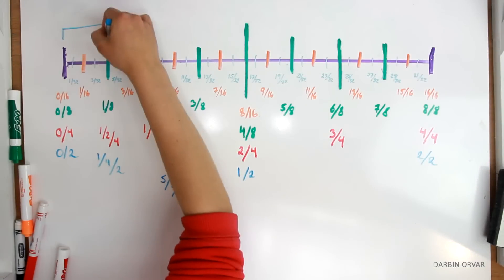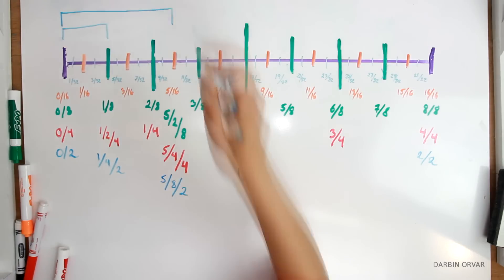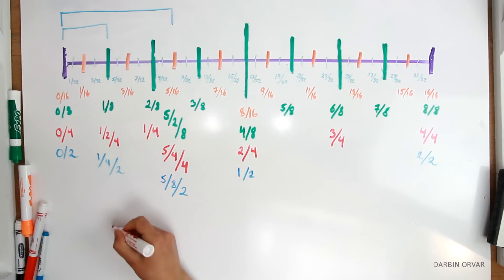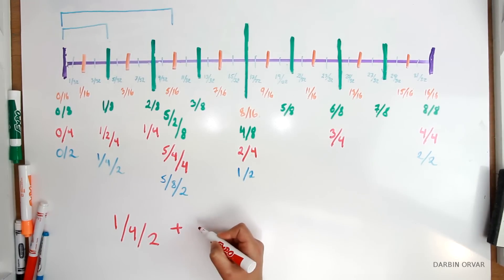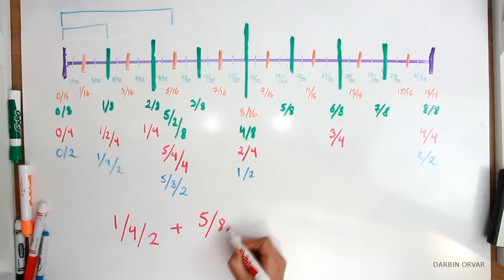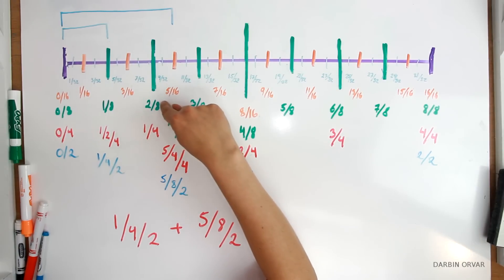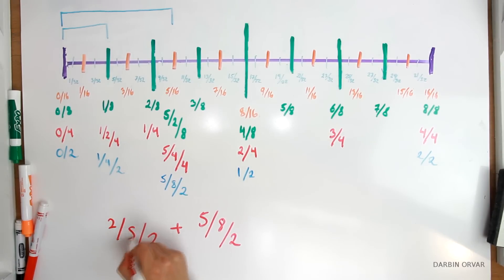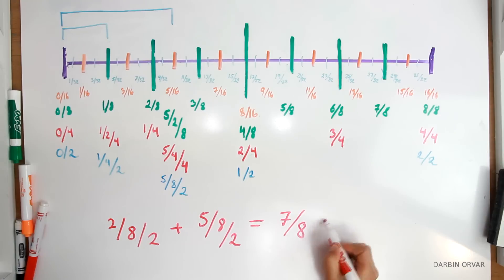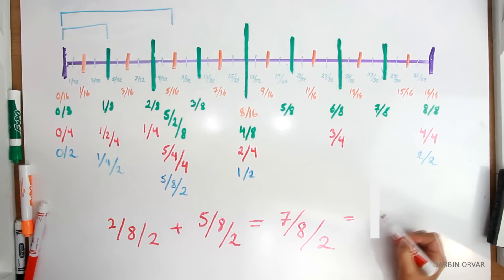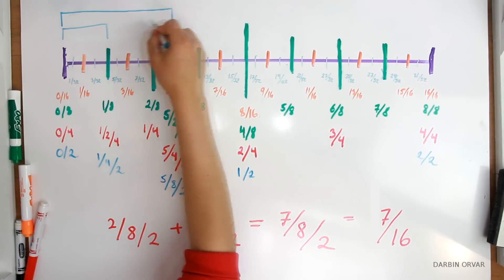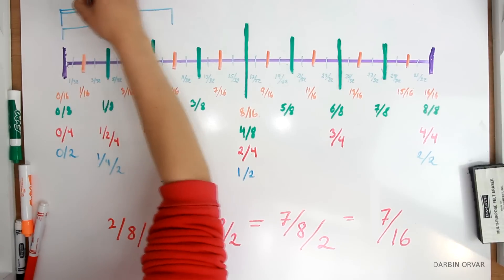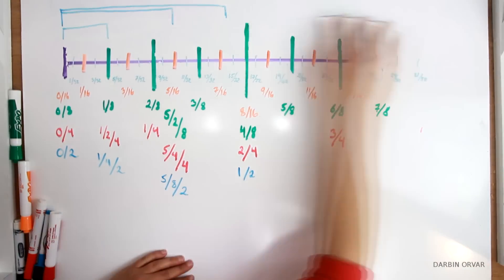How about if we look at it in a different way? Let's say you want to add 1 eighth to 5 sixteenths. If we write this in the 2 scale — the blue lettering — then it reads 1 fourth over 2 plus 5 eighths over 2. We can look at the 2 eighths line, which is the same as 1 quarter, so all the denominators become the same, which makes it easy to add. Combined, that is 7 eighths over 2, or 7 sixteenths. So 1 eighth plus 5 sixteenths equals 7 sixteenths.